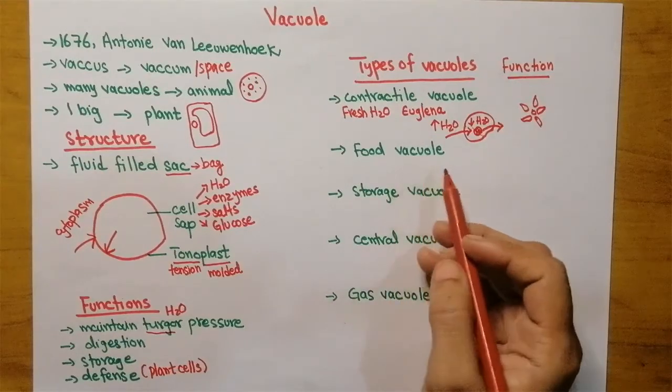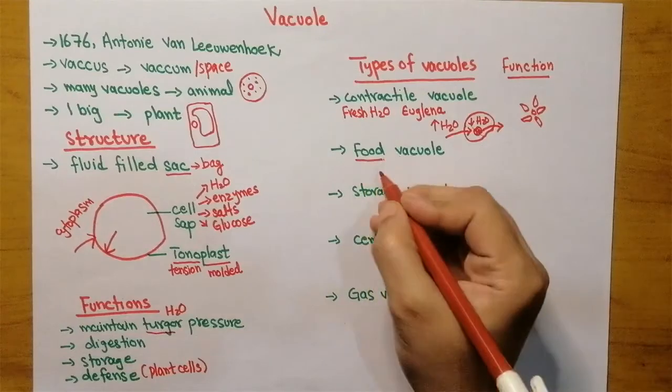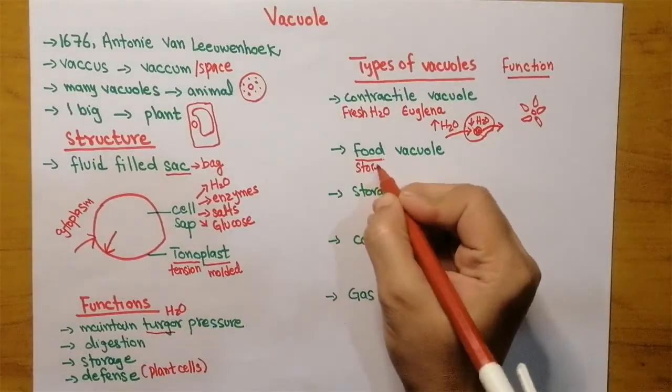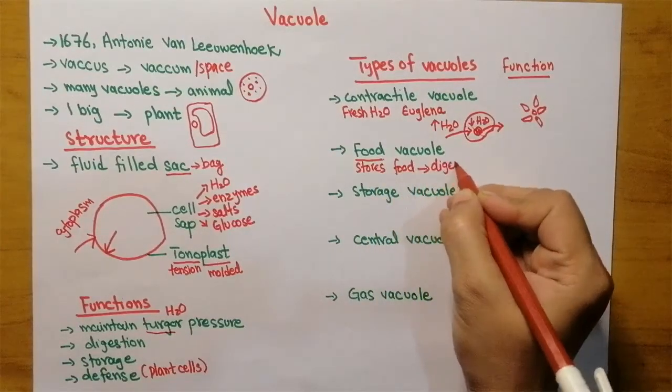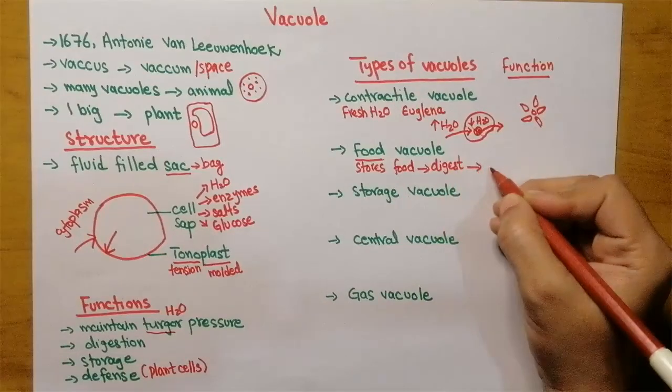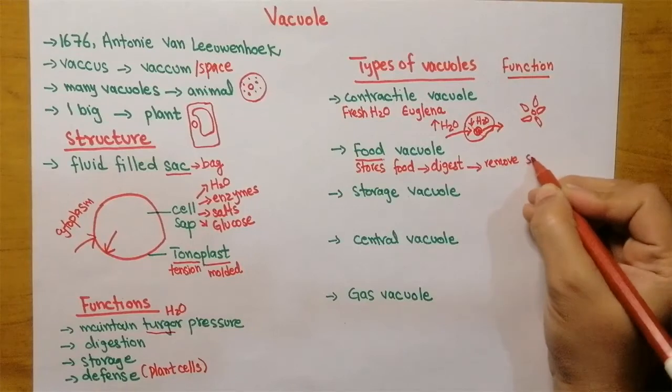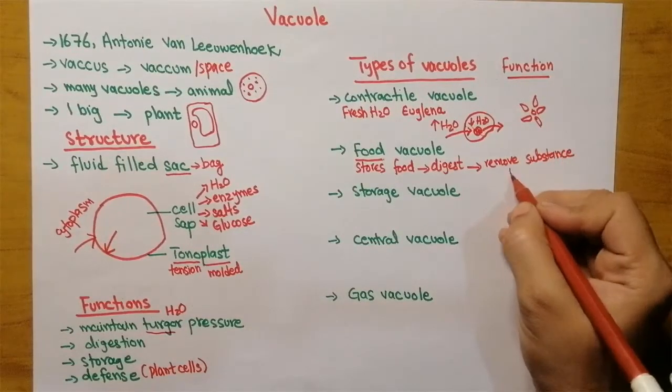The other type of vacuole is food vacuole. As the name indicates, this vacuole stores food, then digests it, and then removes simple substances to be utilized by the cell.